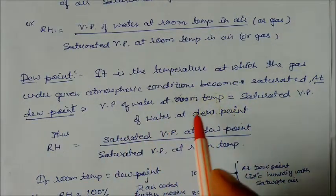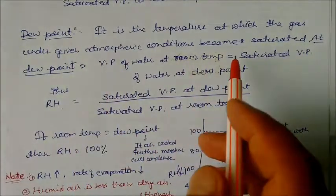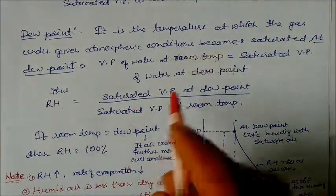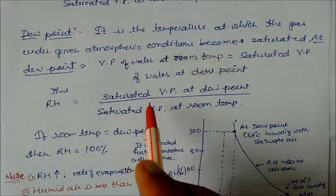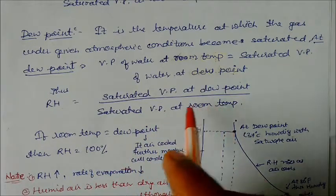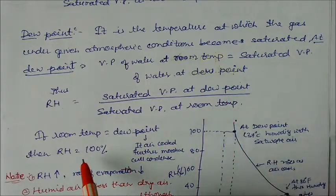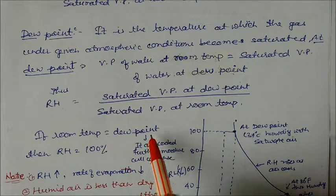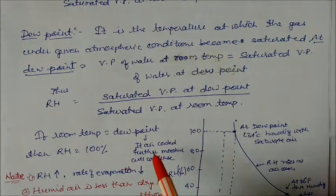This means relative humidity becomes 100% when that condition prevails. We can write: relative humidity = saturated pressure at dew point divided by saturated pressure at room temperature. When pressures in both conditions become equal, relative humidity is 100%. If you cool below the dew point, moisture in air will condense and convert to liquid form.